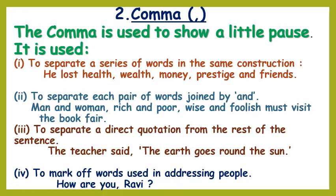We use a comma to separate a direct quotation from the rest of the sentence. For example: the teacher said, 'the earth goes round the sun.' They said, 'we have passed the examination.'